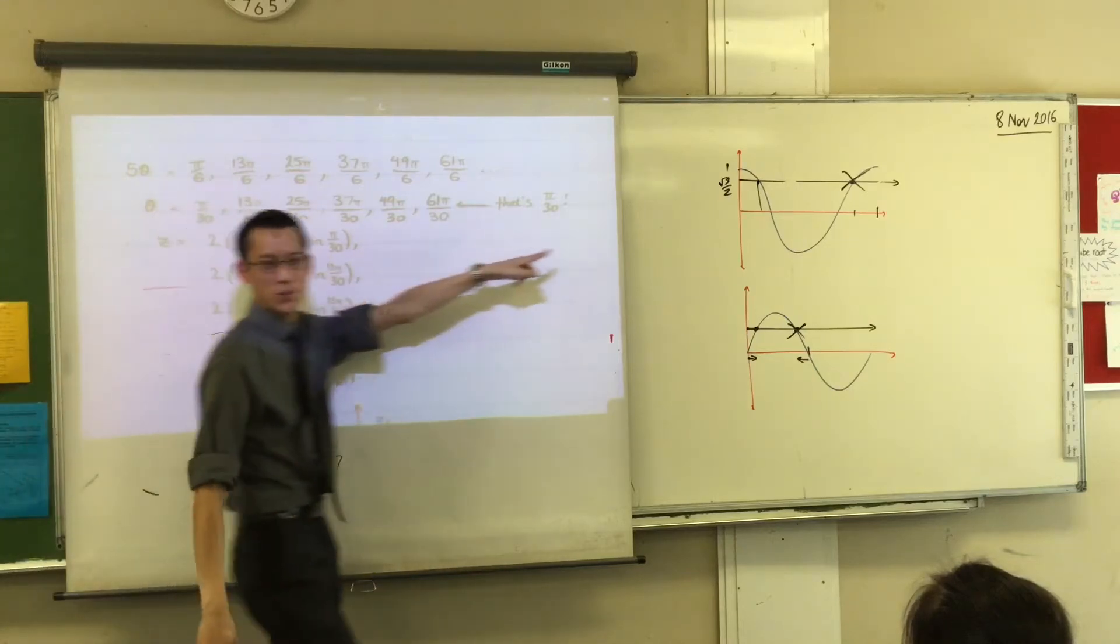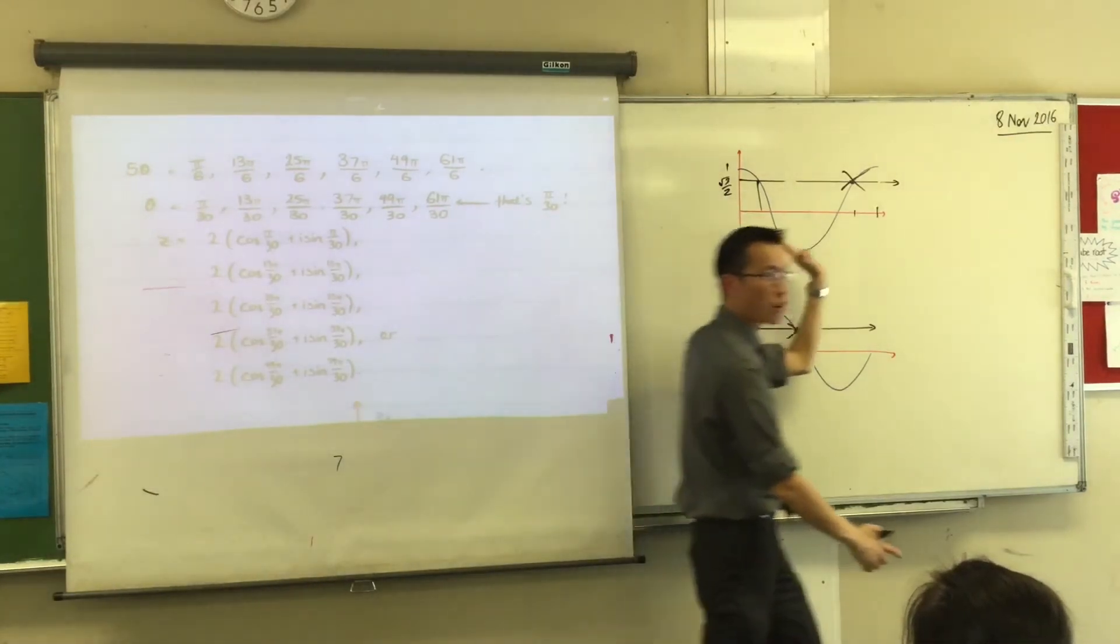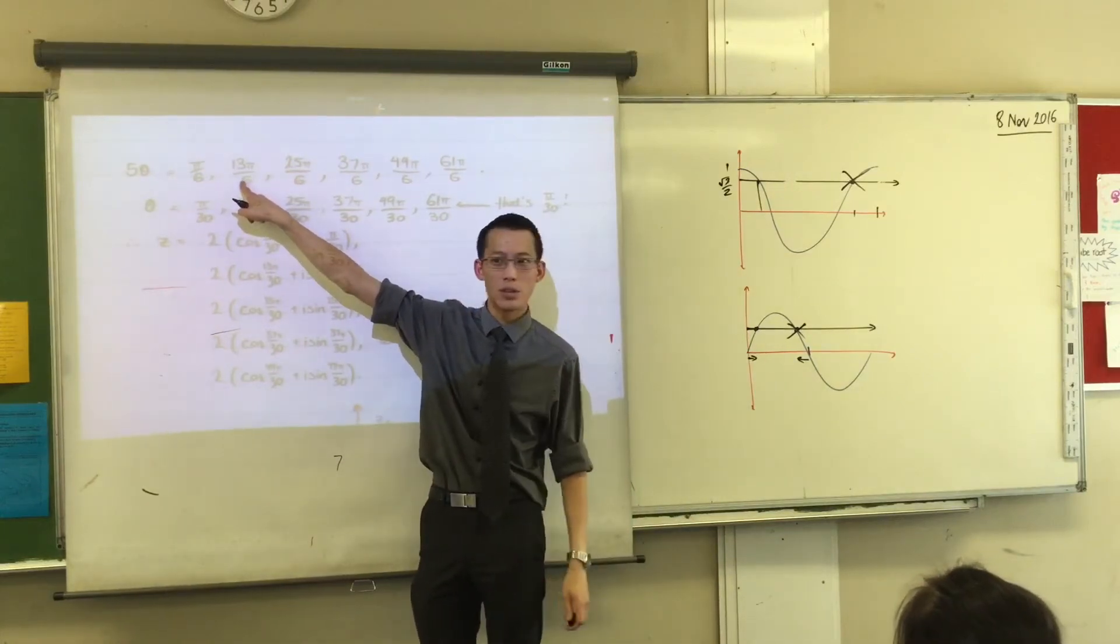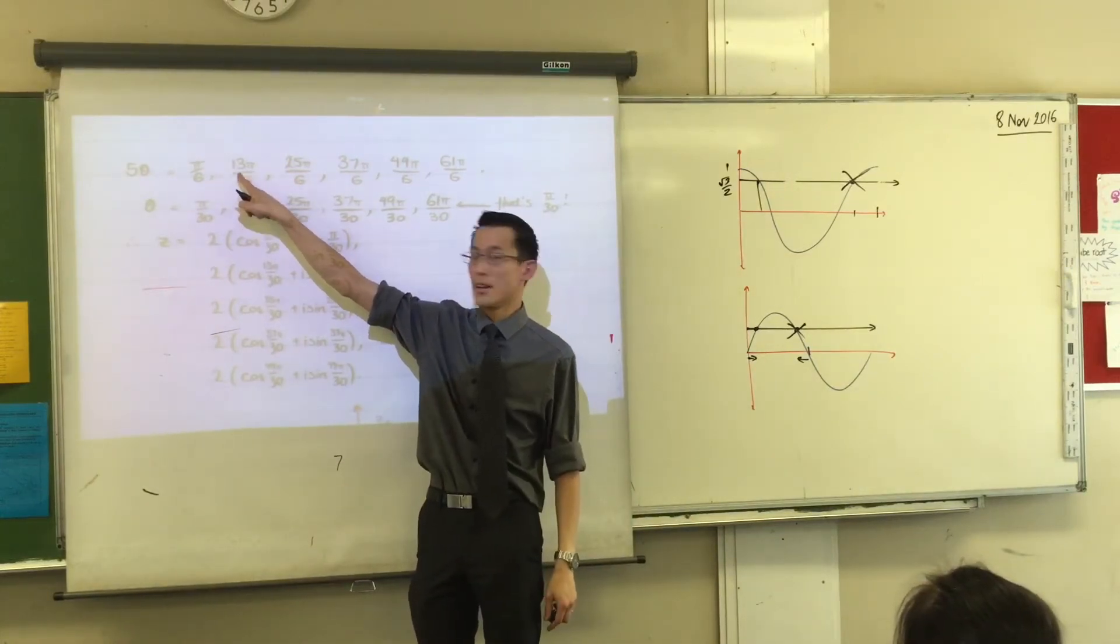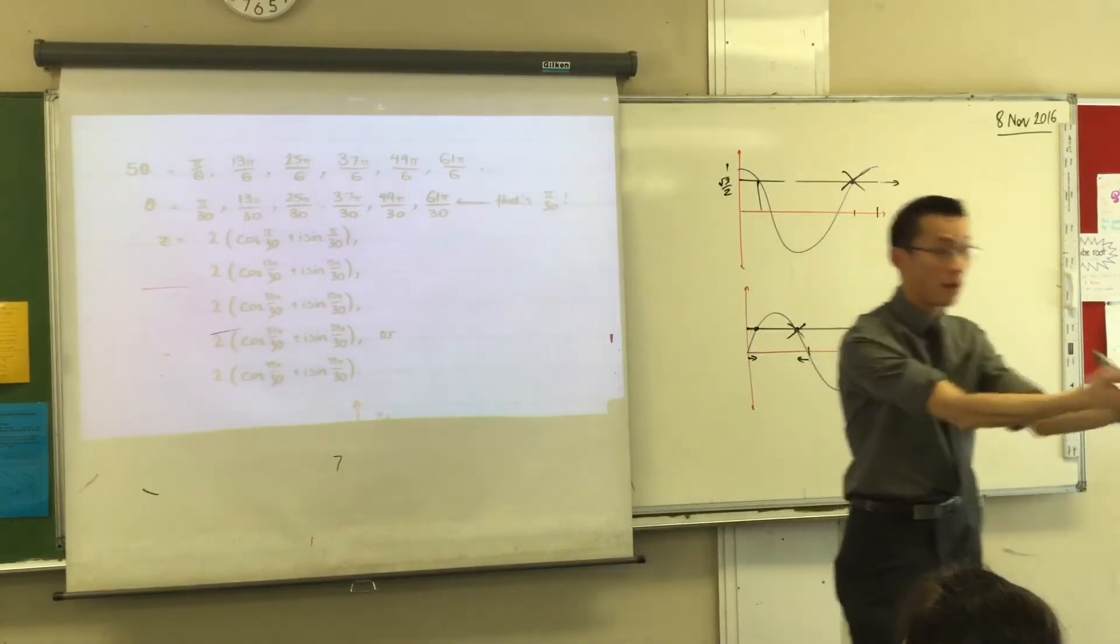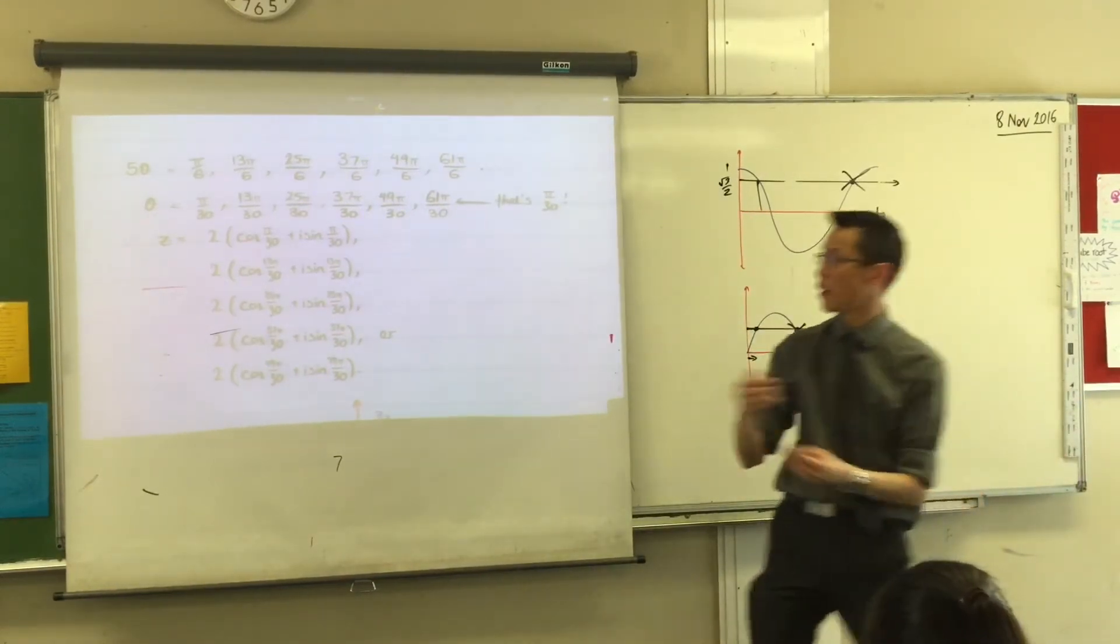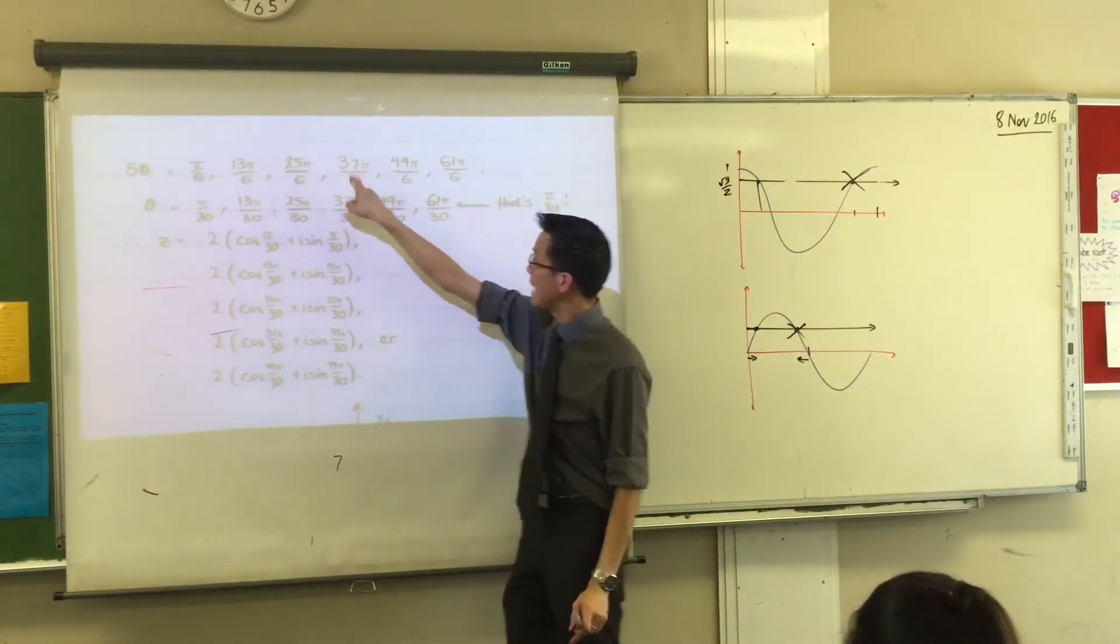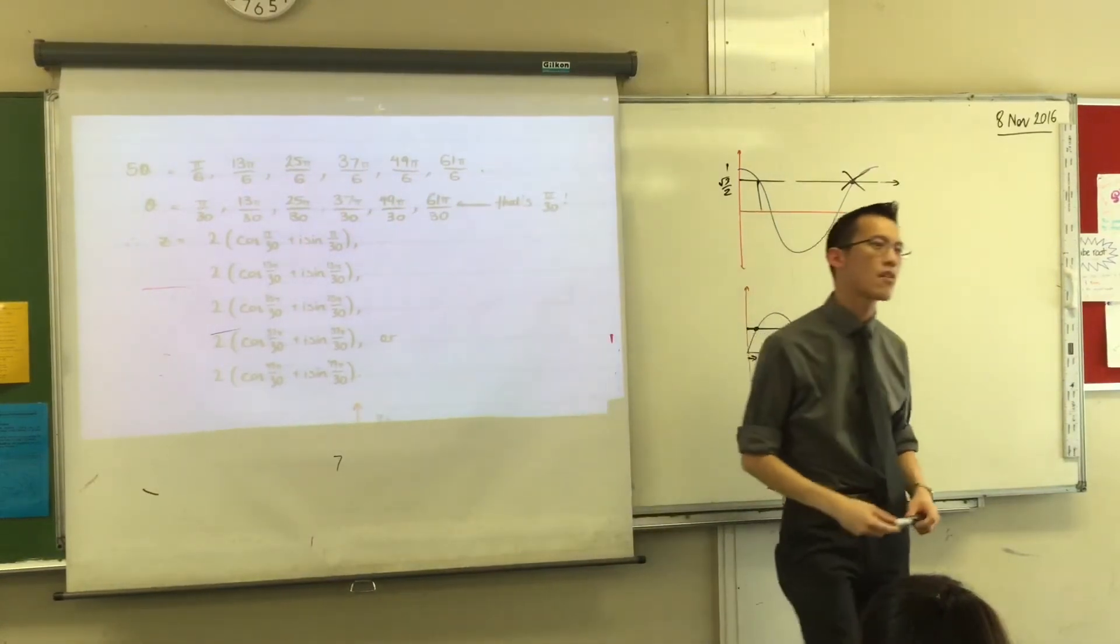But this graph is just one part of the graph, it goes on forever. Right? So have a look. How did I get to this next angle? What did I do? From π/6 to 13π/6? It has a period of 2π, so I went forward 2π. I got to here. I went forward another 2π and then I kept going.